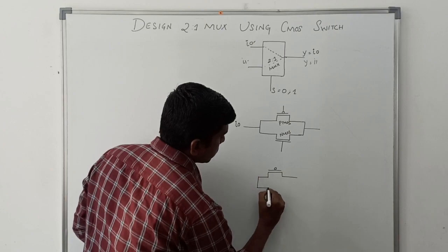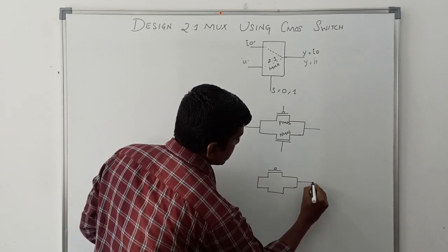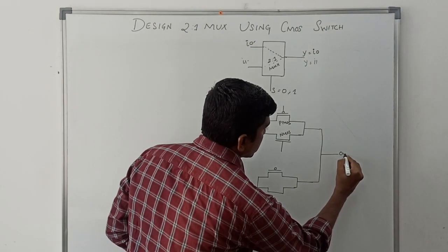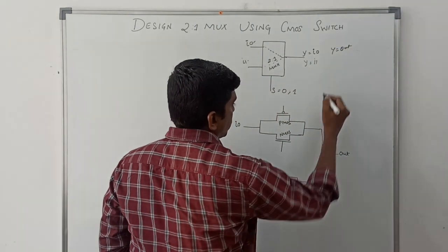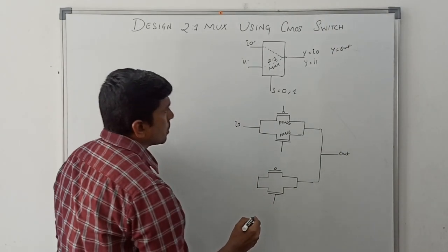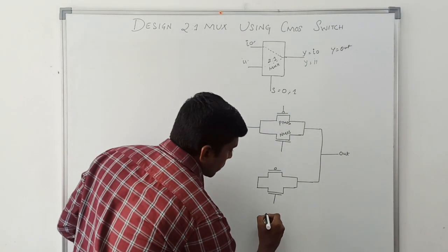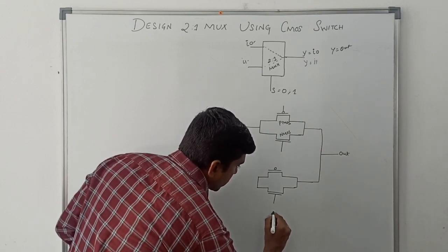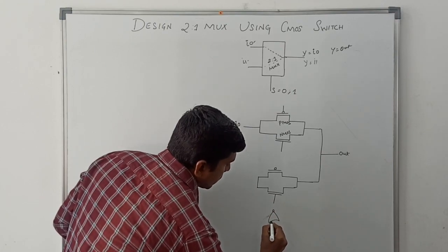This one is PMOS and this one is NMOS for the second switch. These two outputs are shorted to get the final output Y. Y equals out. For the selection line, S equals 0 and S equals 1, so I need a complement operation. Using a NOT gate, I am complementing the selection line value.